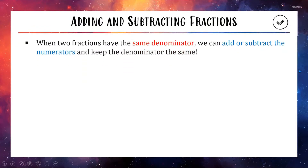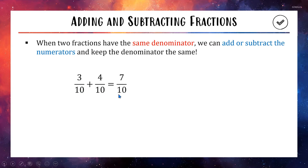Please get down in your notes: when two fractions have the same denominator, you can add or subtract the numerators and keep the denominator the same. For example, 3 out of 10 plus 4 out of 10 — the base is matched, so we keep it as out of 10, and 3 plus 4 is 7. So the answer is 7 out of 10. Easy peasy.